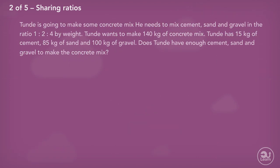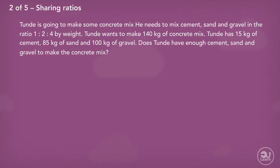Another example. Tunde is going to make some concrete mix. He needs to mix cement, sand and gravel in the ratio 1 to 2 to 4 by weight. Tunde wants to make 140 kilograms of concrete mix. Tunde has 15 kilograms of cement, 85 kilograms of sand and 100 kilograms of gravel. Does Tunde have enough cement, sand and gravel to make the concrete mix he wants?